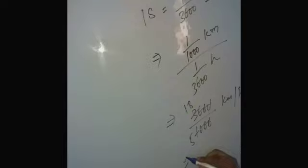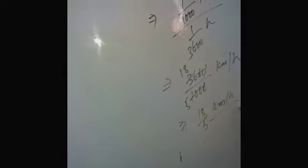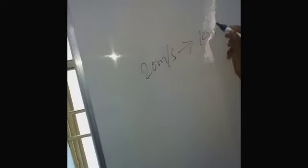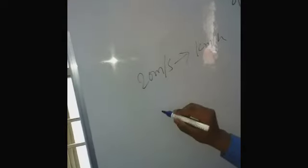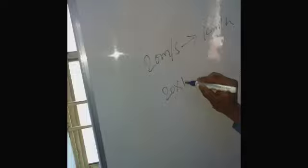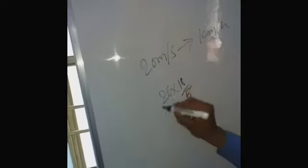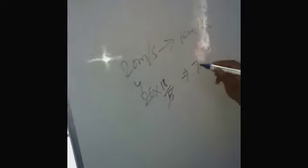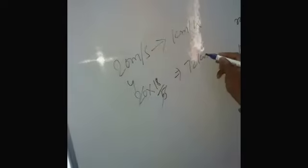We have to multiply by 18 by 5 kilometers per hour. For example, 20 meters per second changes into kilometers per hour: 20 multiplied by 18 by 5, we get 72 kilometers per hour.